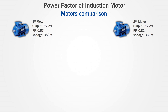Now let's take a look at a comparison between two induction motors. Both have an output of 75 kW and are connected to a three-phase 380V power supply system. The first motor has a power factor of 0.87 and the second one has a power factor of 0.82. We are going to find out how much power each motor will need to draw from the power supply system to provide 75 kW of power. In order to find that out, we need to calculate the apparent power using the power factor formula.